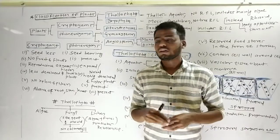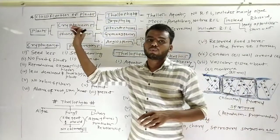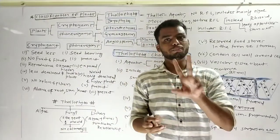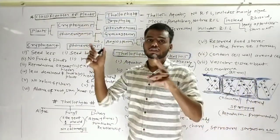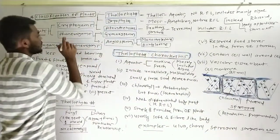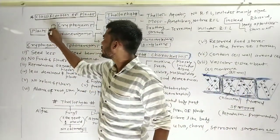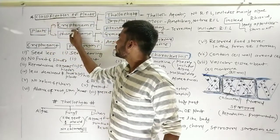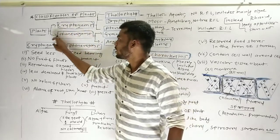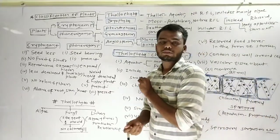We also discussed the criteria used by R.H. Whittaker to classify living organisms into five different groups. After that, we discussed the two sub-kingdoms of plants. In 1886, the botanist Eichler divided the kingdom Plantae into two different sub-kingdoms: Cryptogamae and Phanerogamae.